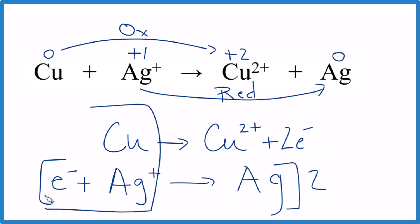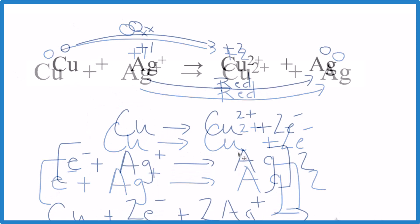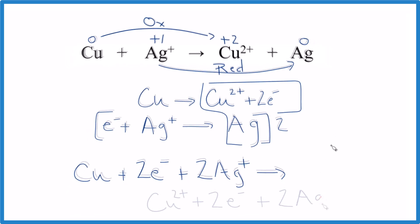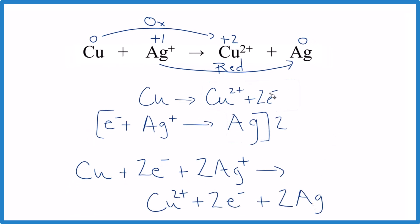Here on this side, these are the reactants up here. Let's shrink this down some. We have our copper, then we have our two times these electrons, two times the silver ion. Those are the reactants. The products are over here. We have our Cu²⁺, our two electrons, and then two times the silver.